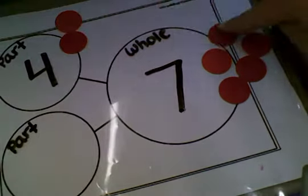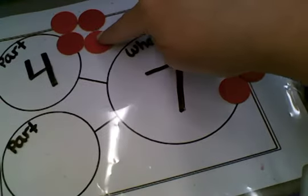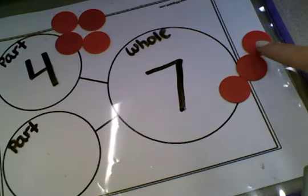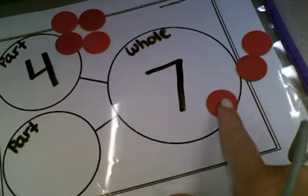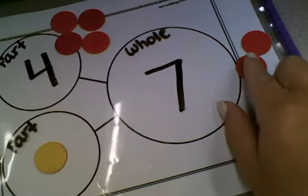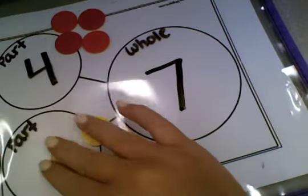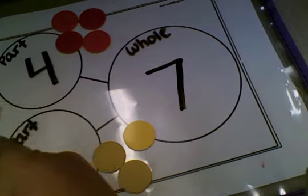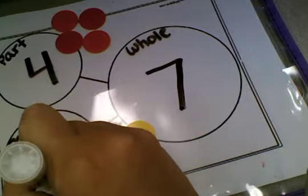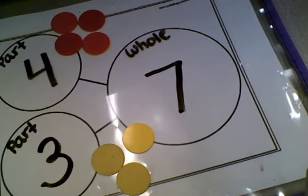One, two, three, four. How many are left for the other part? One, two, three. The missing part was three. You can solve this either way. Thank you.